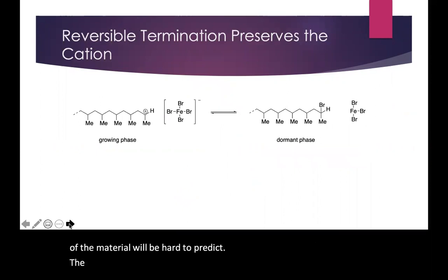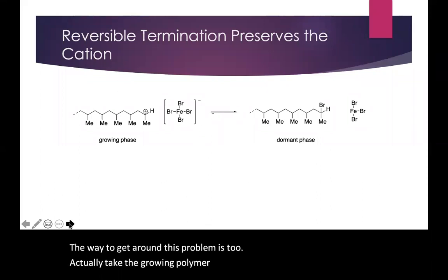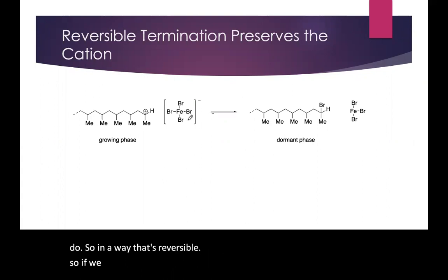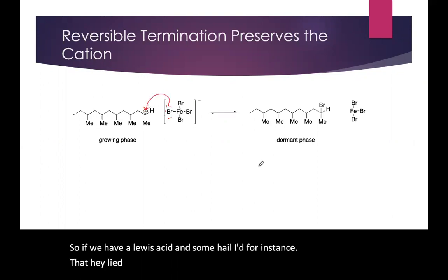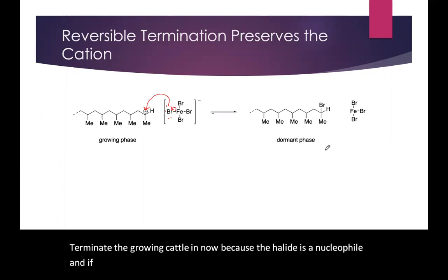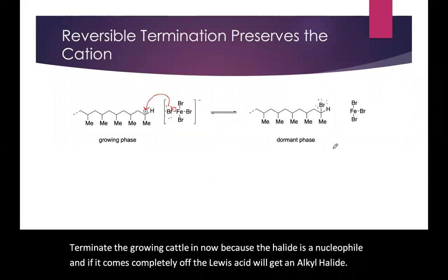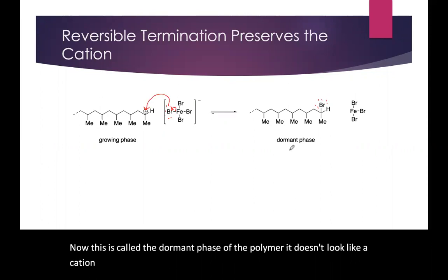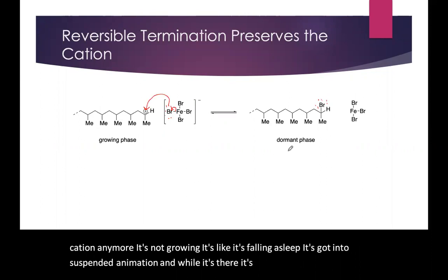The way to get around this problem is to actually take the growing polymer chain and terminate it on purpose, but do so in a way that's reversible. If we have a Lewis acid and some halide, that halide can terminate the cation because the halide is a nucleophile, and if it comes completely off the Lewis acid, we'll get an alkyl halide that's no longer growing. This is called the dormant phase of the polymer. It doesn't look like a cation anymore — it's not growing, it's like it's fallen asleep, gone into suspended animation. While it's there, it's relatively safe and can't undergo these unexpected terminations.